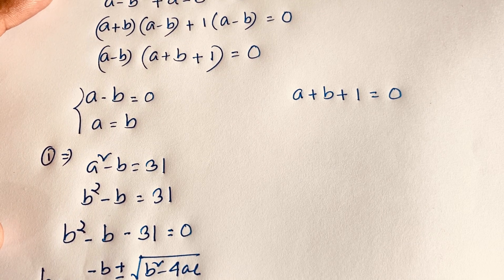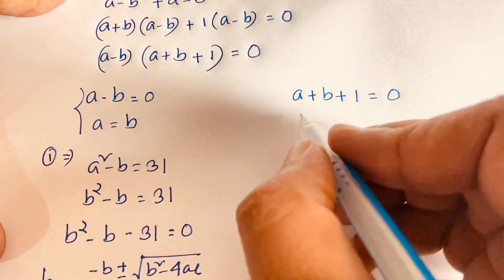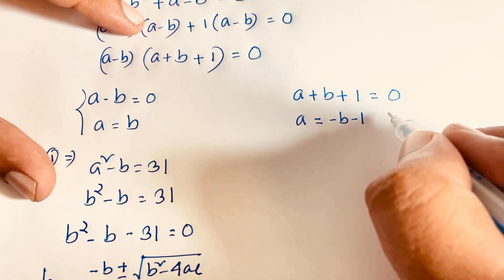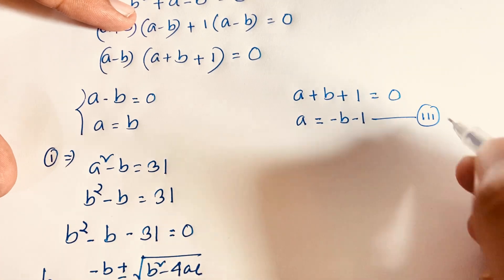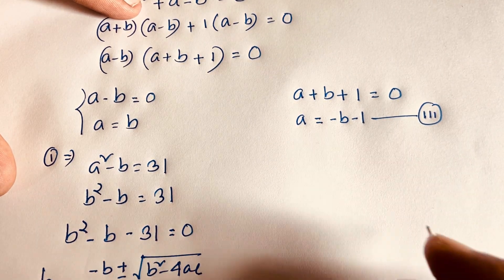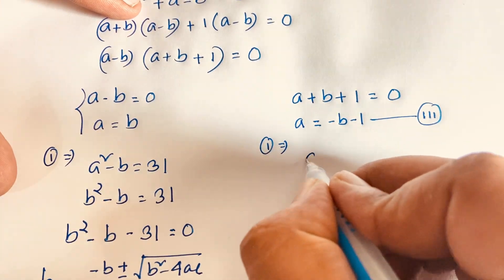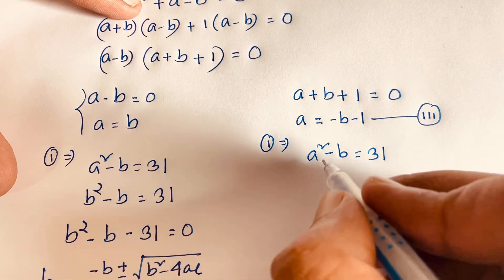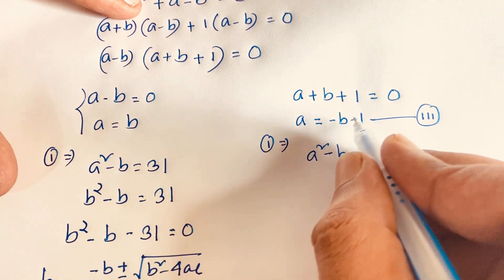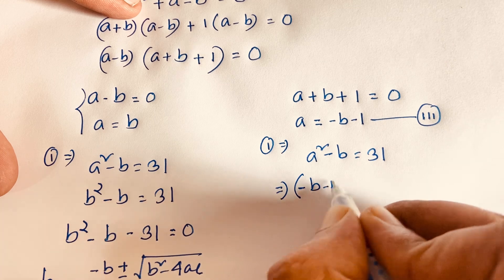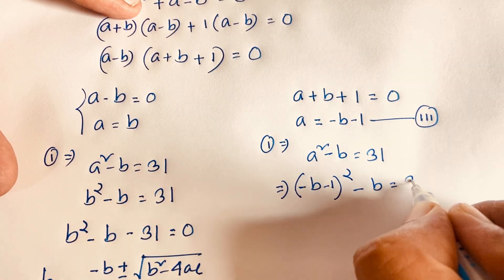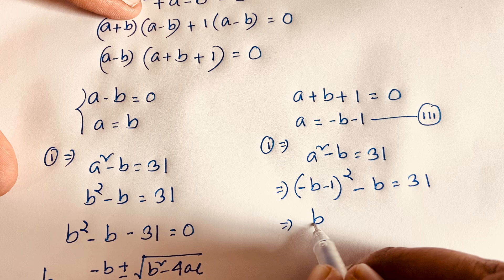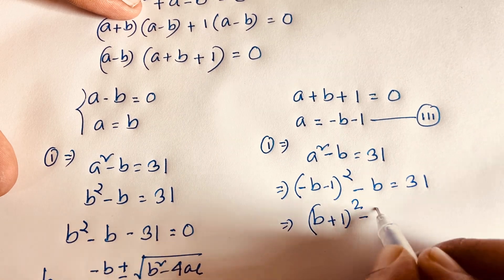For Case 2, A plus V plus 1 equals 0, so A is equal to negative V minus 1. Recalling our first equation, A squared minus V equals 31. Substituting A equals negative V minus 1, we get negative V minus 1, whole squared, minus V equals 31. Since negative squared is positive, this becomes V plus 1 whole squared minus V equals 31.